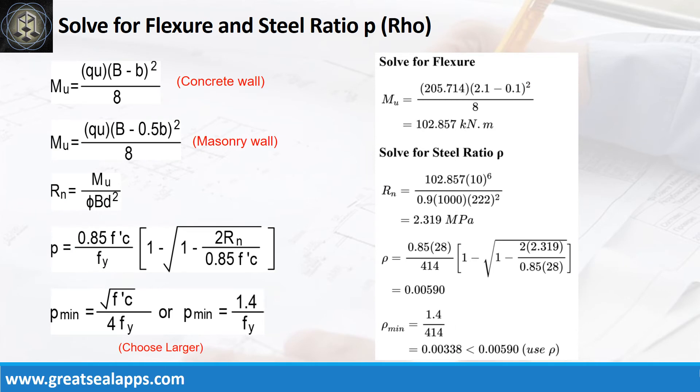Given ultimate soil pressure equals 205.714kPa, footing width equals 2.1 meters, and masonry wall thickness equals 200mm. The maximum moment is 102.857kPa. Given resistance factor equals 0.9, B equals 1000mm, and D equals 222mm. The beam design ratio RN equals 2.319MPa and reinforcement ratio RAW equals 0.0059.